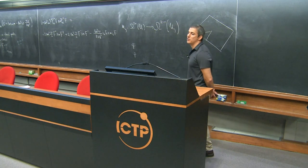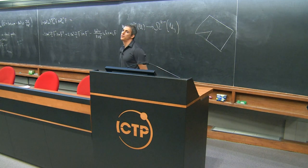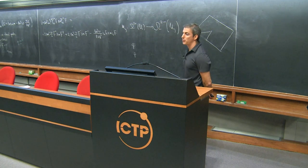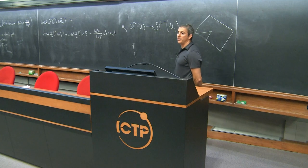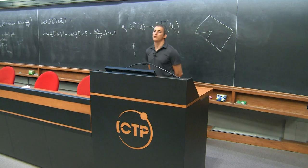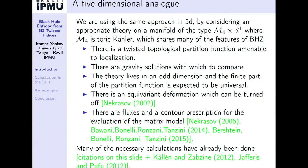The reasons are that it matches very well with the three-dimensional calculations and shares many features. There is a topologically twisted partition function amenable to localization — we heard about this in Maxim's talk. There are gravity solutions with which to compare. The theory lives in an odd dimension, so the finite part of the partition function is expected to be universal. There's an equivariant deformation on the compact space that one can turn off. And as we heard in the morning, which fluxes exactly should be summed over and what exactly the contour is are nowhere near as clear as in two dimensions.